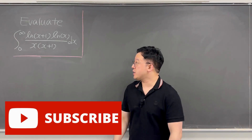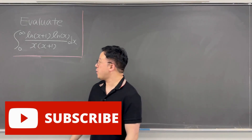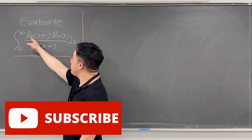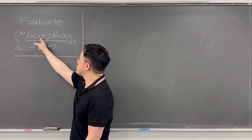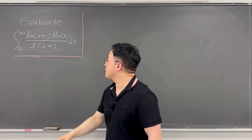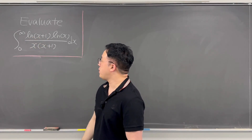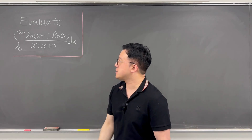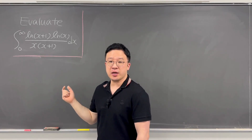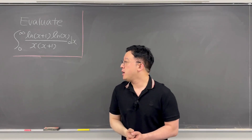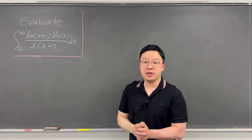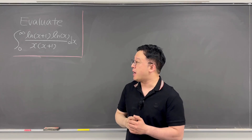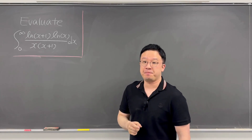Okay, here's the question. Evaluate this integral from zero to infinity of ln(x+1) times ln(x) over x times (x+1) dx. It's a pretty tricky integral.